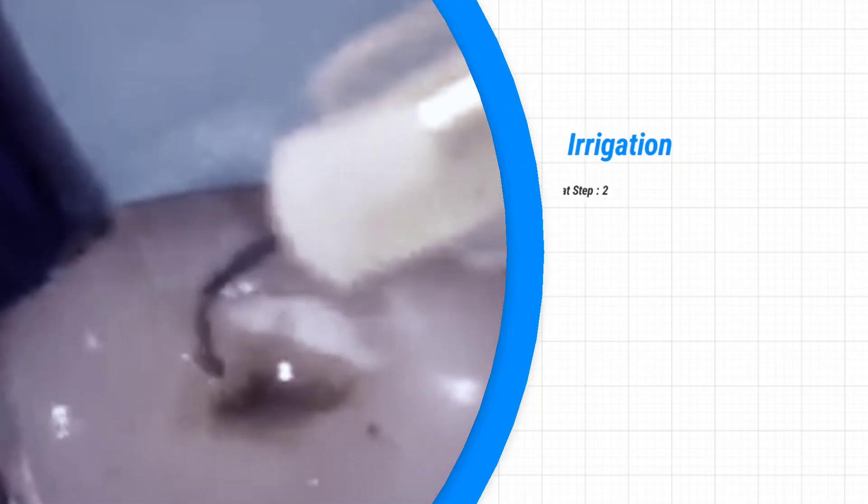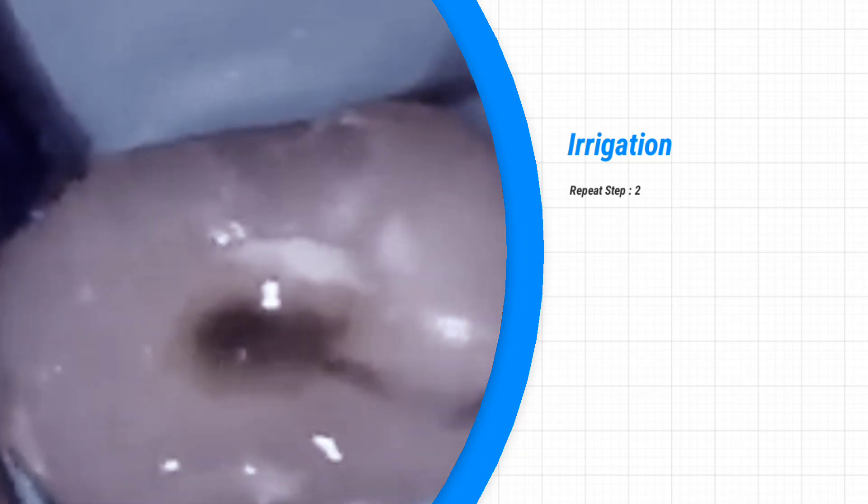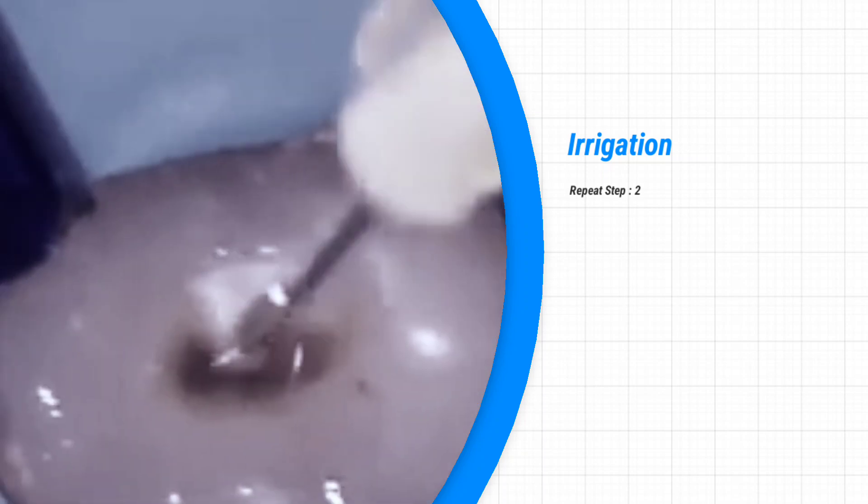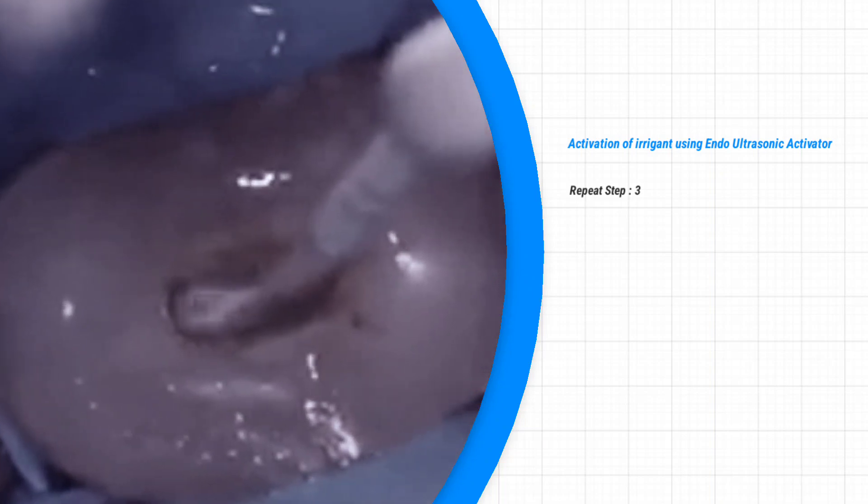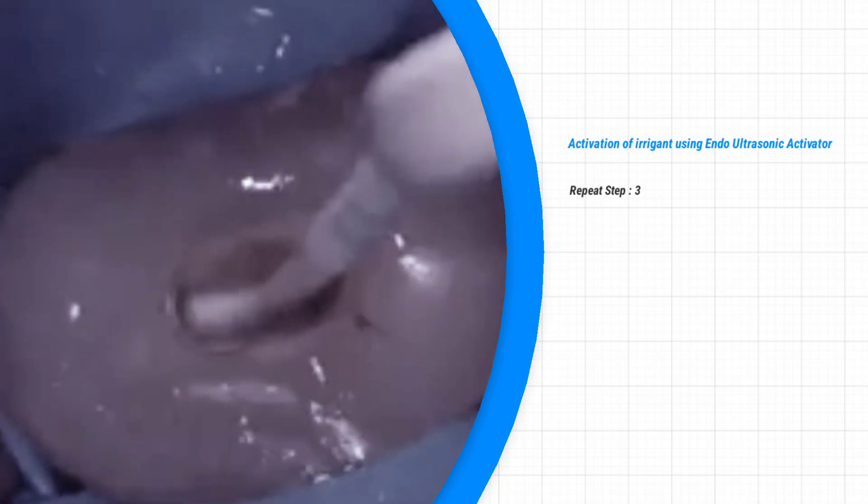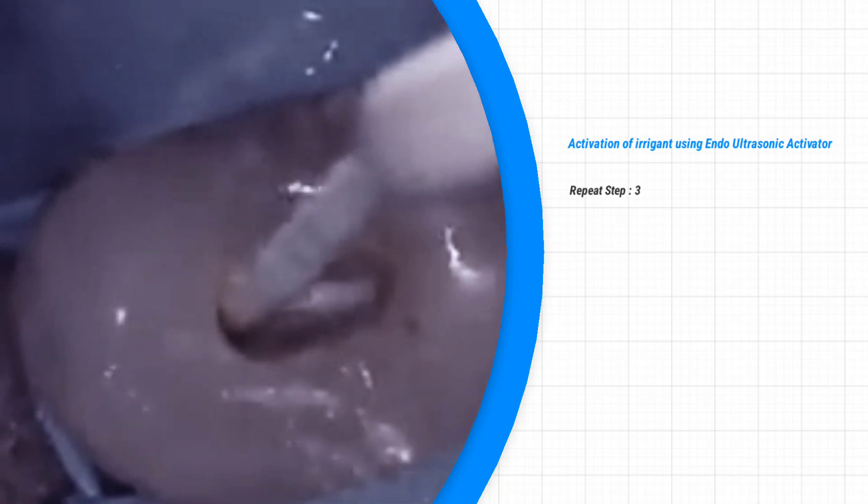Next is the irrigation. Use a side vented needle to inject sodium hypochloride solution into the canal. Then repeat the activation of the irrigant using endodontic ultrasonic activator. Agitate the solution using short vertical strokes for around 30 seconds.